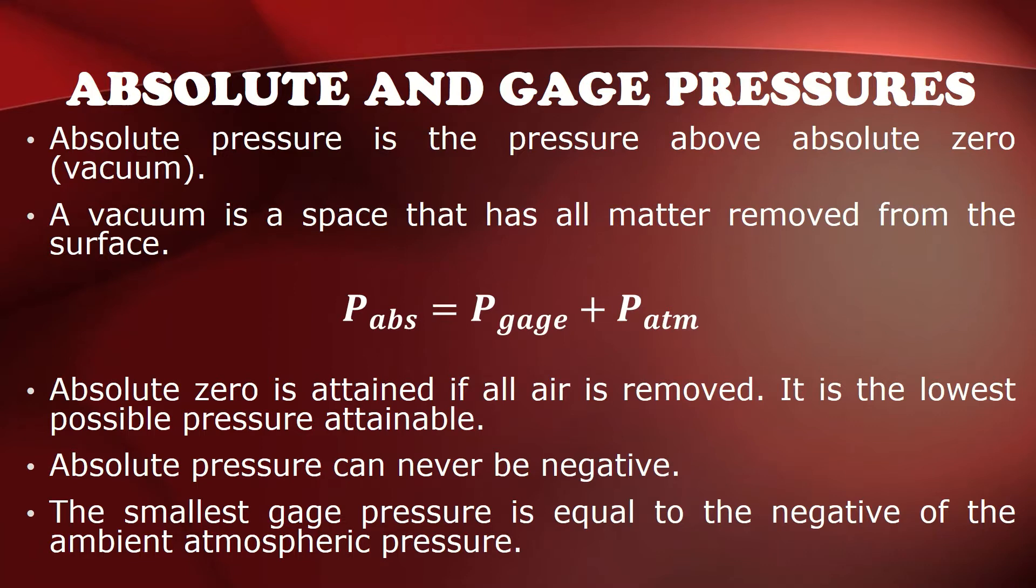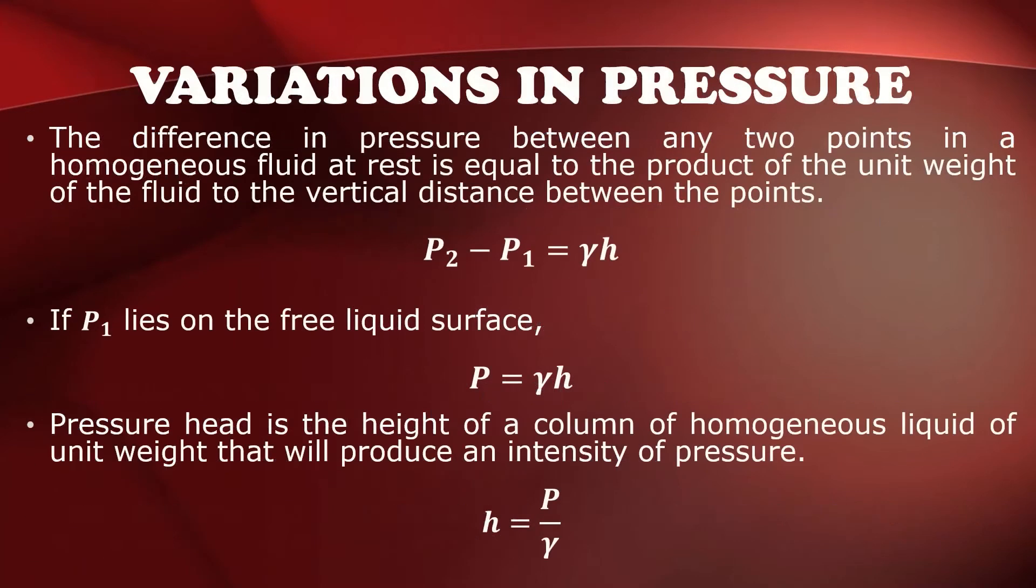The smallest gauge pressure is equal to the negative of the ambient atmospheric pressure. So there are variations in pressure, for example, in a situation where the difference in pressure between any two points in a homogeneous fluid at rest is equal to the product of the unit weight of the fluid to the vertical distance between the points. So if we have different points on a uniform fluid at rest,